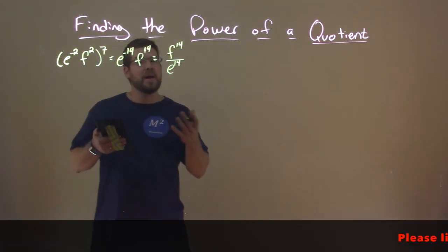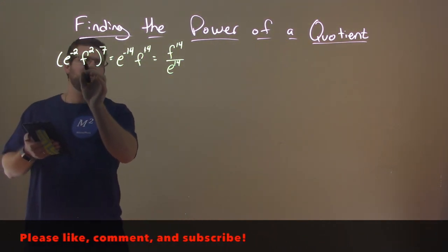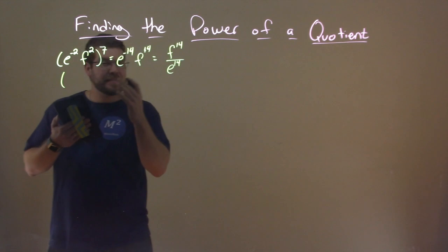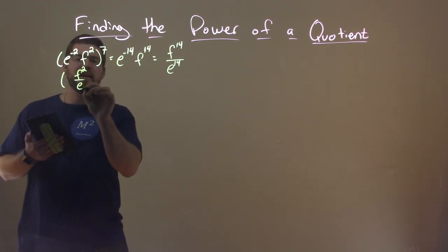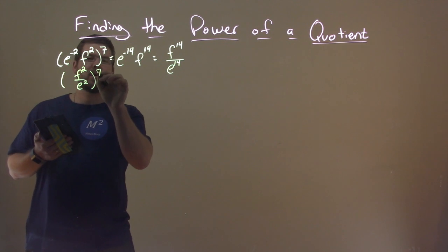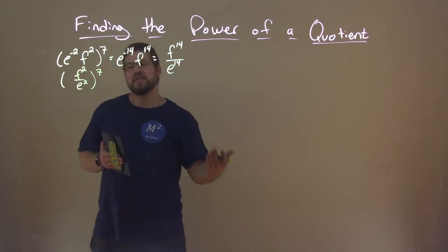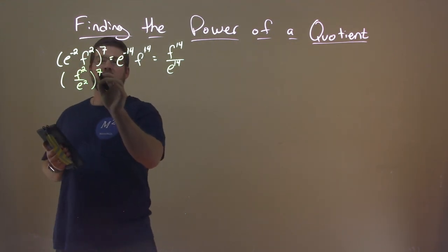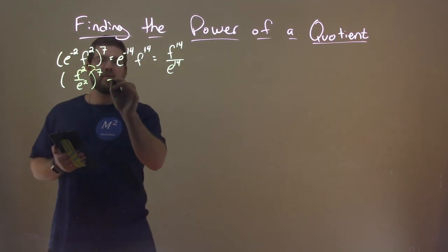So one thing we actually could do, though, if we see it down here ahead of time, is what if we broke it down right here? We know that that negative exponent, if you look inside the parentheses first, would have been f squared over e to the positive 2 power, all to the 7th power. And then what we can do is we can now distribute that exponent to the numerator and the denominator exponent. Same rules apply. We multiply them.